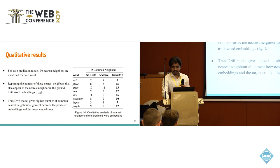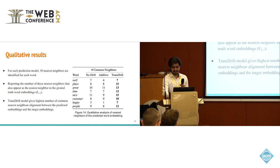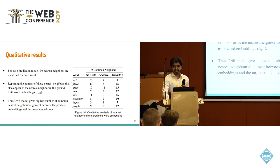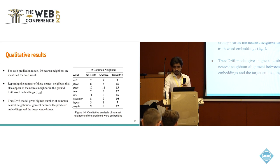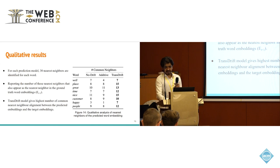We performed another experiment to check the quality of word embeddings predicted by the three models. As shown in Figure 14, we calculated the 30 nearest neighbors using the predicted embeddings from all three models, then counted the number of common nearest neighbors when using the ground truth embedding instead. In this case also, the TransDrift model gives the highest number of common nearest neighbor alignments between the predicted and ground truth embeddings.